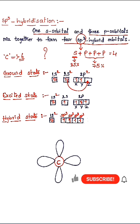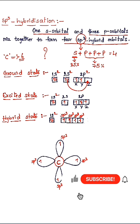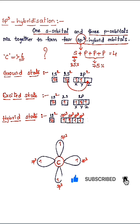Carbon's sp3 hybridization geometry shows four sp3 hybrid orbitals, each with a single electron. These four sp3 hybrid orbitals are called degenerate orbitals, meaning they all have the same energy. There are four unpaired electrons present in this carbon atom.